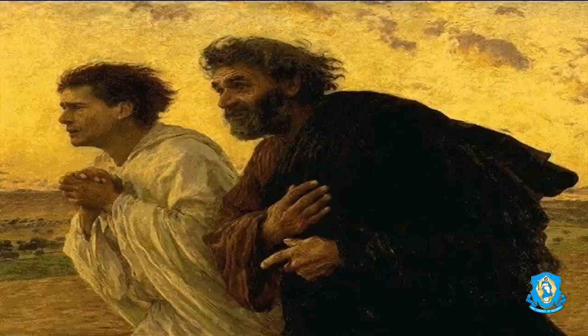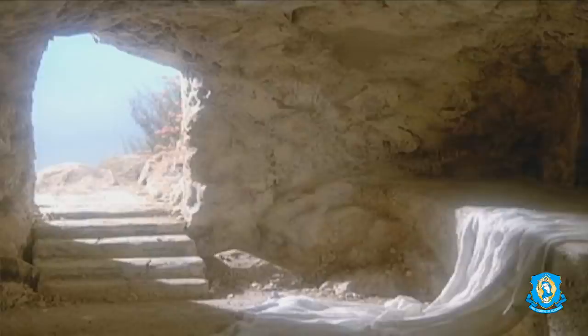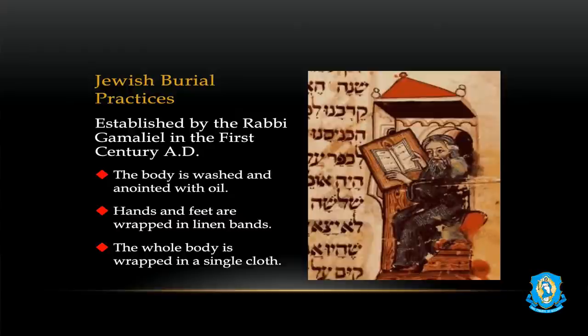Let's finish talking about these burial practices. The body was washed and anointed with oil. From the first-century rabbis, we know: the body was washed and anointed with oil, the hands and the feet were wrapped in linen, and the whole body was wrapped into a single cloth. This is important because the Shroud is an image of a cloth, but the image of Christ is on only one side, because the body lay on one part of the linen cloth and it folded over him.